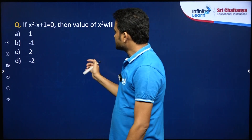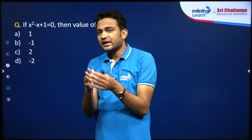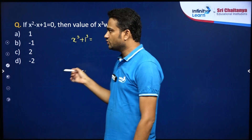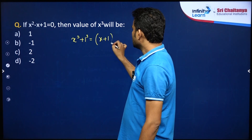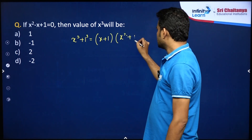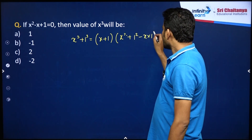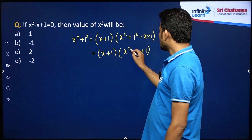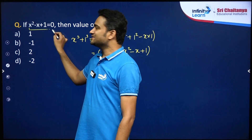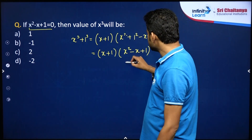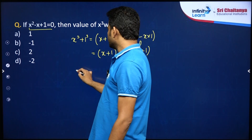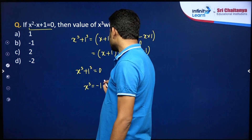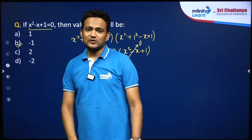Since we have to find the value of x cube, we can use the identity of x cube plus 1 cube. We know that a cube plus b cube is a plus b times a square minus ab plus b square. If we further simplify, we get x plus 1 times x square minus x plus 1. And what is the value of x square minus x plus 1? This is given in the question and it is 0. So x cube plus 1 equals 0, meaning x cube is minus 1. So the correct answer is option B.